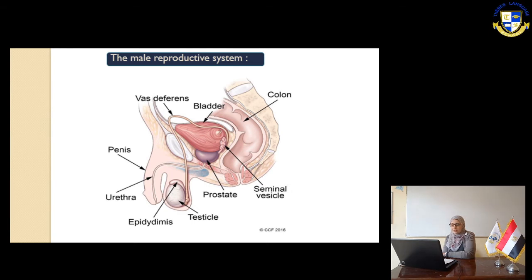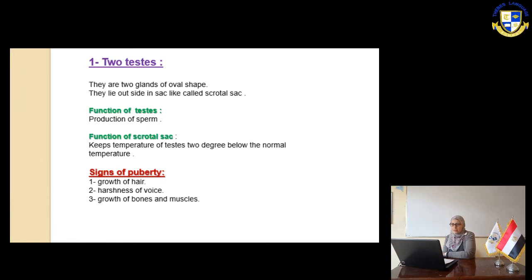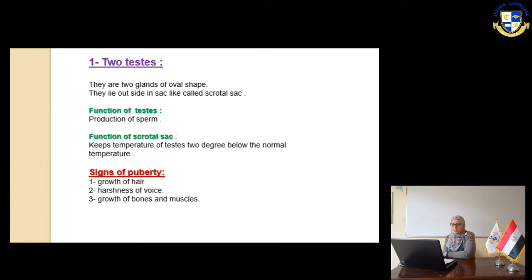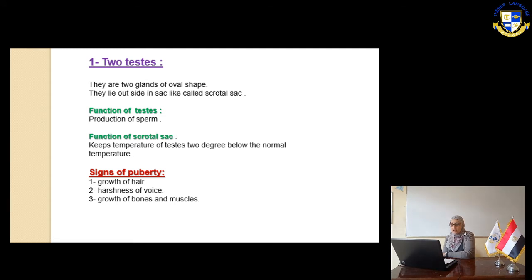All of these are called genital glands. Slide number 4. The two testes are two oval-shaped glands. They lay outside the body in a sack called the scrotal sac. The function of the testes is to produce sperm. The function of the scrotal sac is to keep the temperature of the testes two degrees below the normal body temperature.